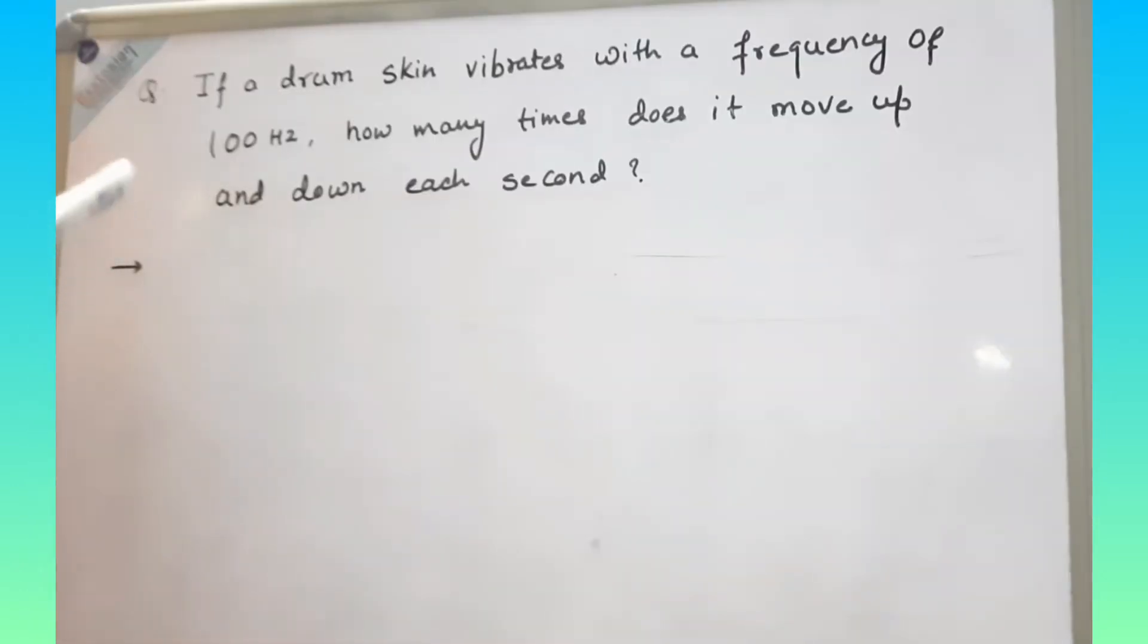This is another question. If a drum skin vibrates with a frequency of 100 hertz, how many times does it move up and down each second? So in this question, we have to find out that how many times it will vibrate. If you look at the question, frequency is given 100 hertz. And as we know, frequency is number of vibration in 1 second.